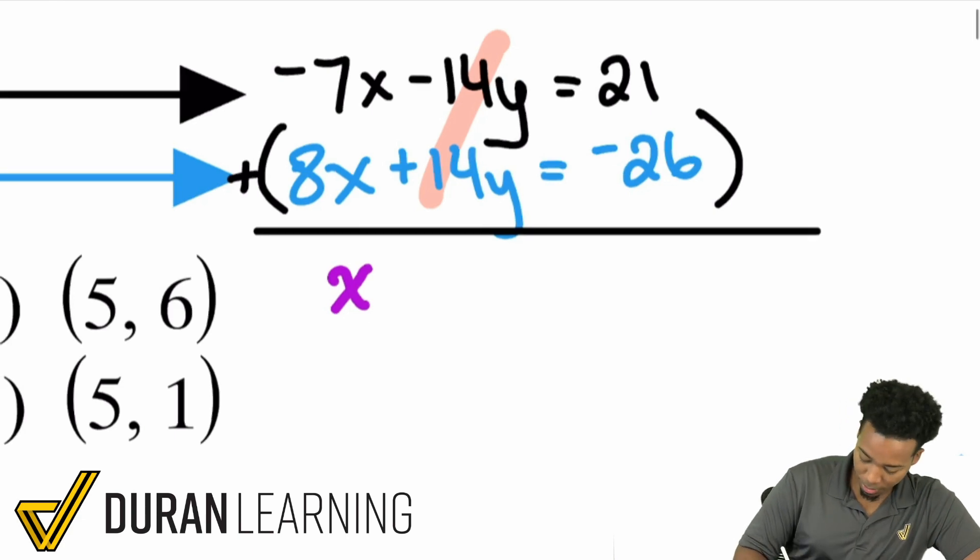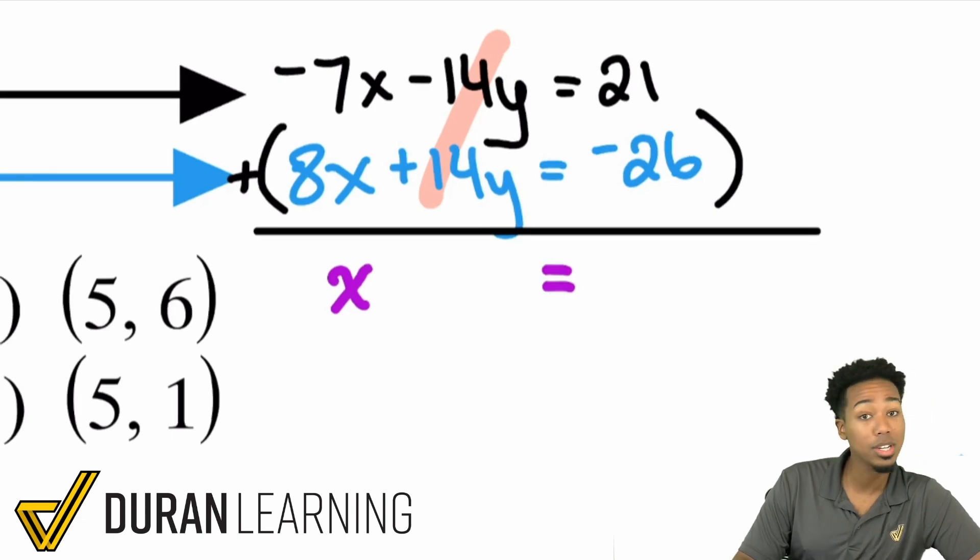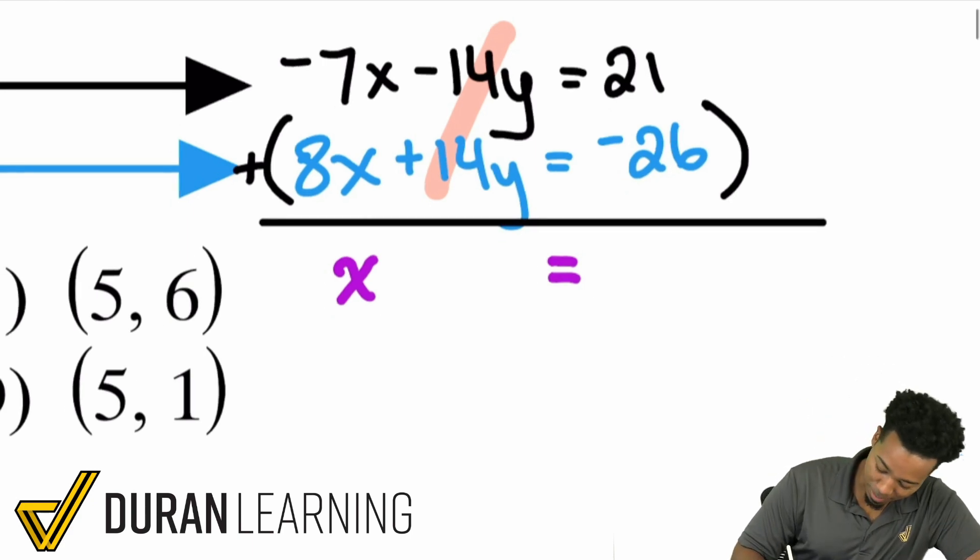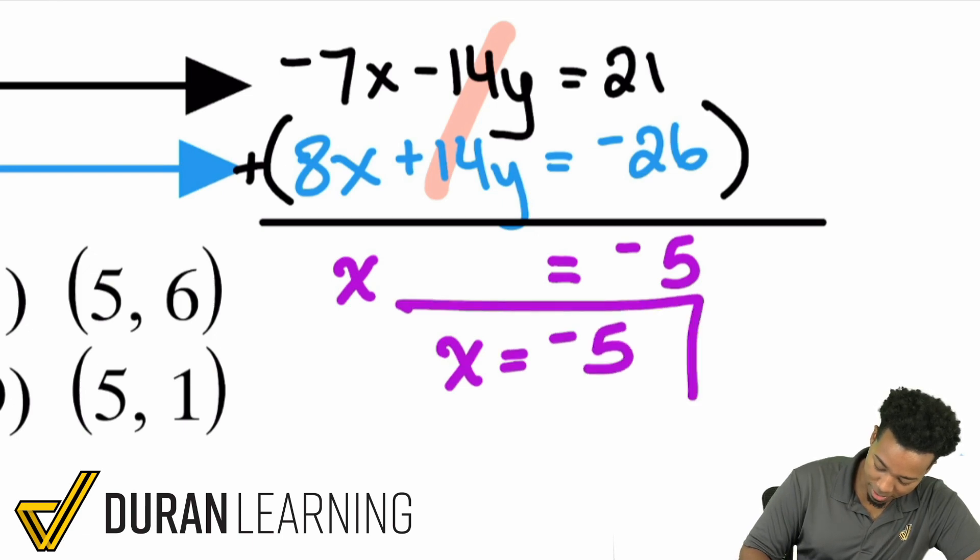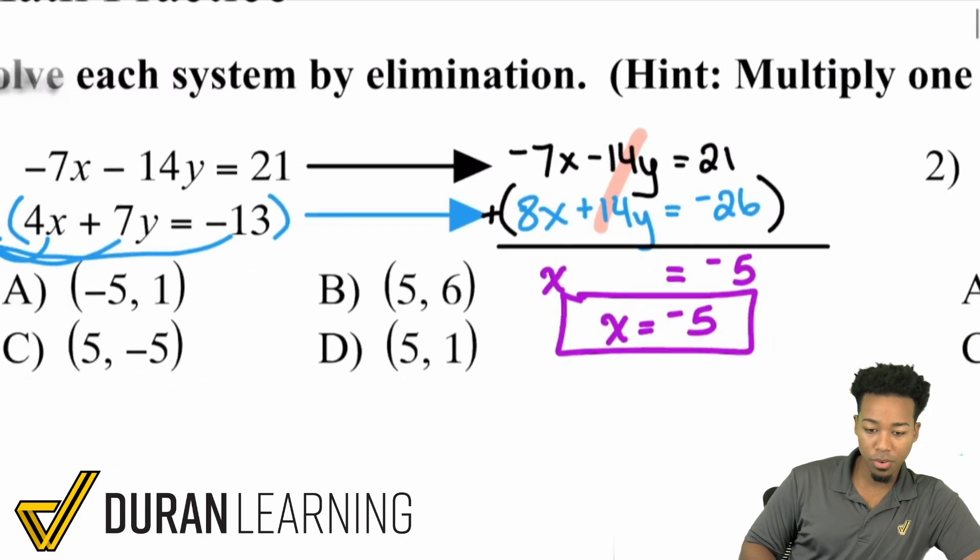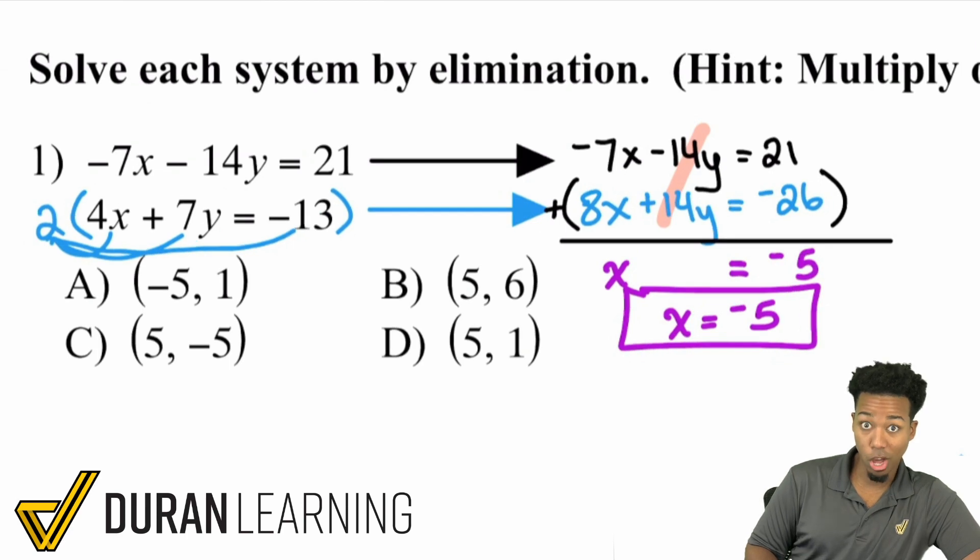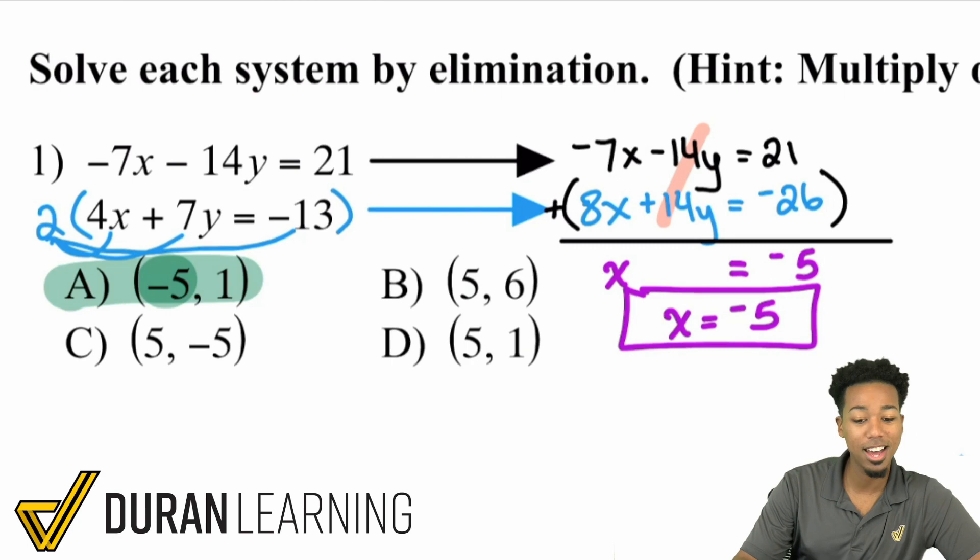That gets eliminated. And so on the right side, we have 21 minus 26, and that's going to be negative 5. So we have ourselves immediately understanding that x is negative 5. Do we need to solve for anything else? No. We see it right there. A is the only one where x is equal to negative 5 and we're done.